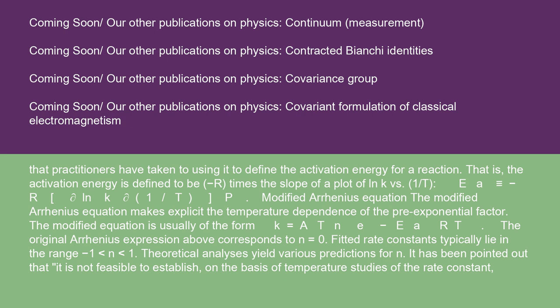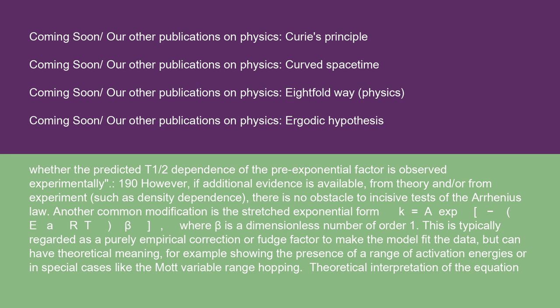Modified Arrhenius equation: The modified Arrhenius equation makes explicit the temperature dependence of the pre-exponential factor. The modified equation is usually of the form K equals A·T^n·e^(-Ea/RT). The original Arrhenius expression corresponds to n equals 0. Fitted rate constants typically lie in the range -1 < n < 1. Theoretical analyses yield various predictions for n. It has been pointed out that it is not feasible to establish on the basis of temperature studies of the rate constant, whether the predicted T^(1/2) dependence of the pre-exponential factor is observed experimentally. However, if additional evidence is available from theory and/or from experiment, such as density dependence, there is no obstacle to incisive tests of the Arrhenius law.